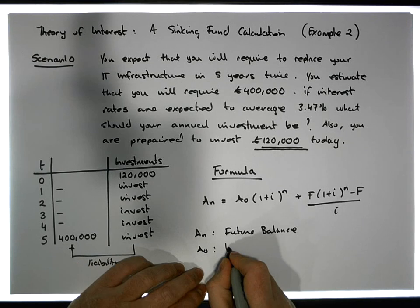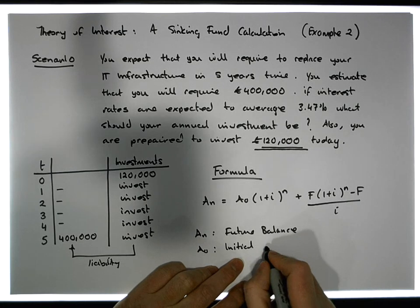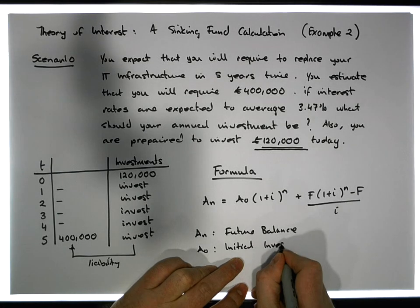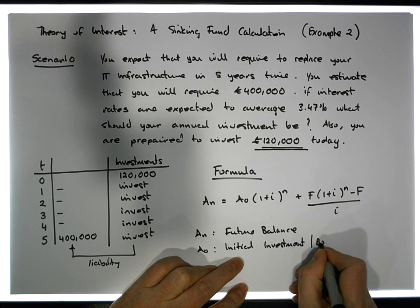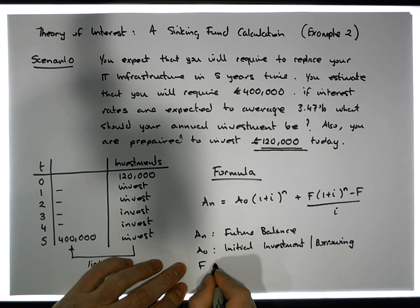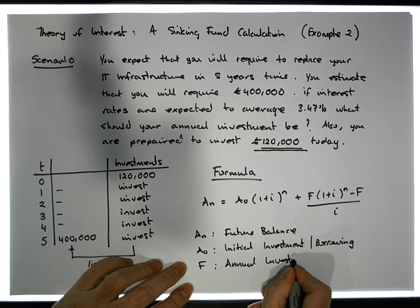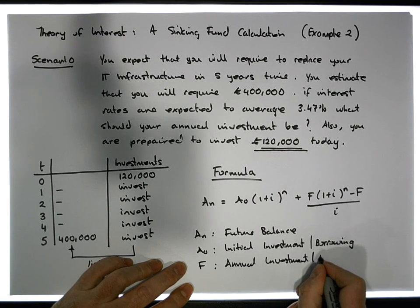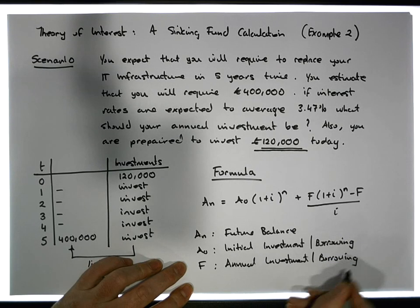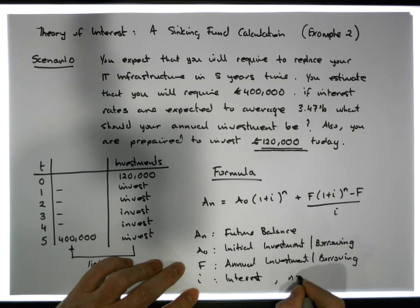A₀ is the initial investment or initial borrowings. f is the annual investment or borrowing, depending on the scenario. i is the interest rate, and n is the duration — how many years the investment runs.